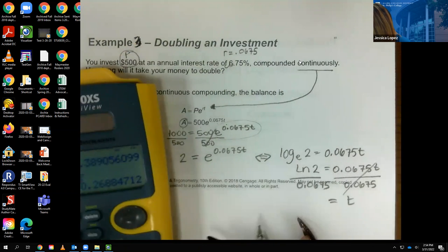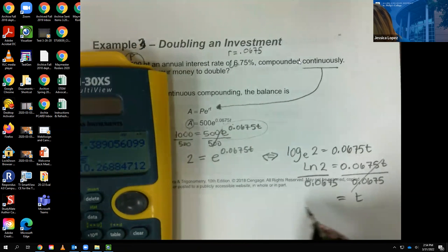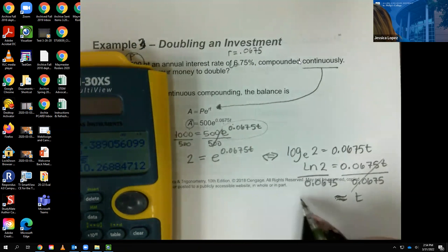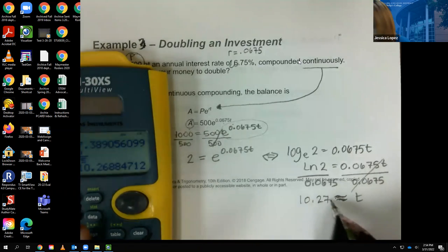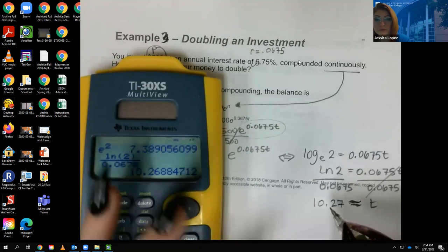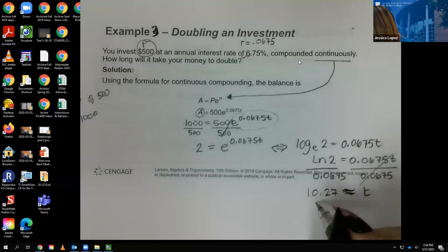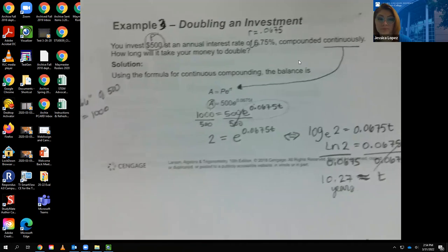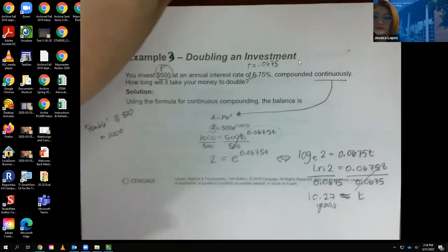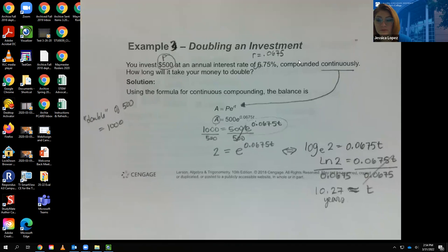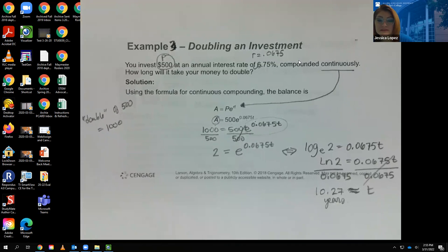Computing that gives t ≈ 10.27. Since t is always in years, it takes about 10 years for the investment to double. And that's how you solve this continuous compounding problem.